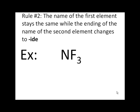Rule number two states that the name of the first element stays the same, while the ending of the second element changes to -ide. So the first element in this molecular formula, NF3, is nitrogen. The second element is fluorine. Now let's drop the ending of fluorine, put on -ide.